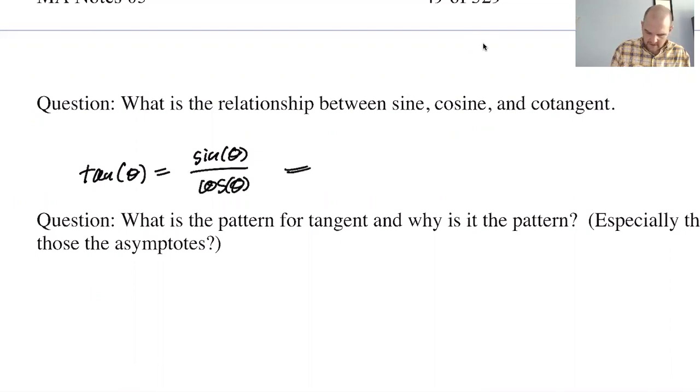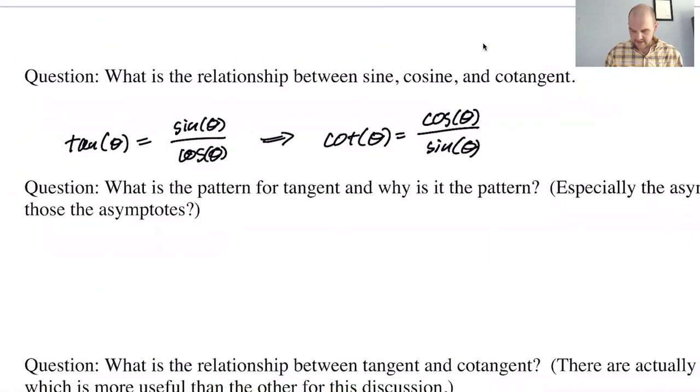And then cotangent is the reciprocal of tangent, so cotangent of theta must be cosine of theta over sine of theta. So this page is really big on building on what you already know. And that, I think in math in general, is a really good idea.